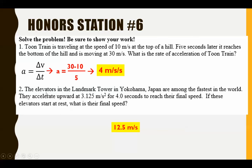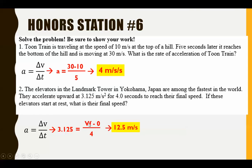In the second one, we have an elevator that we have an acceleration for — 3.125 — and we also have a time. We want to know how fast it's going to be going after that time if they're starting at rest. So in order to do that, we plug in our acceleration on the left, we're searching for a velocity final, and we have time on the bottom. When we multiply both sides by 4, we get 12.5 meters per second.